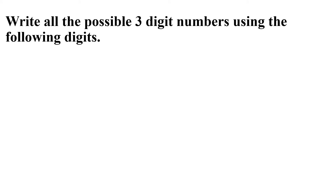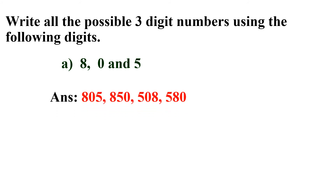Write all the possible three digit numbers using the following digits. A: 8, 0 and 5. First, we will remove the comma. The number we will get is 805. Now, interchange the last two digits to get 850. Now, which is the next number? It is 0. You know, no three digit number can start with 0. So, we will move to the third number.